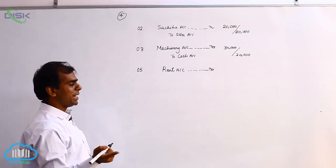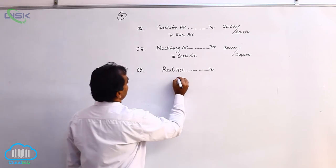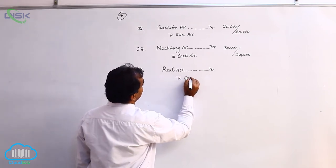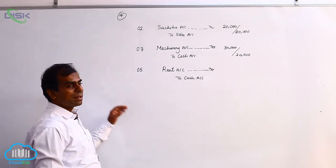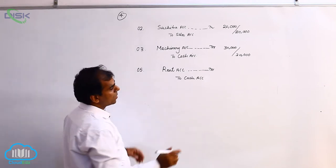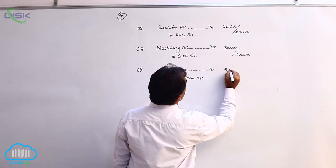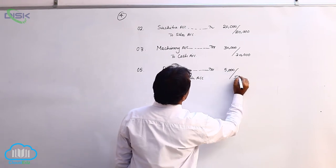Paid means cash is paid. Real account, cash is going out. Therefore, we are crediting cash. So, rent account debit to cash. The amount being 5,000.